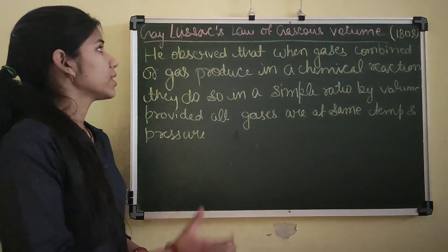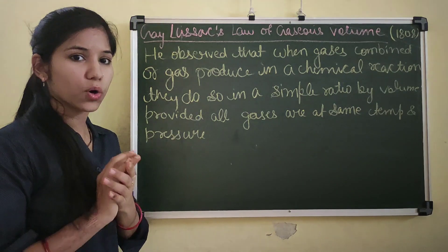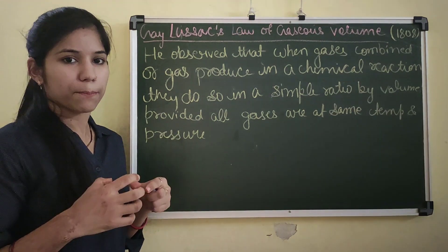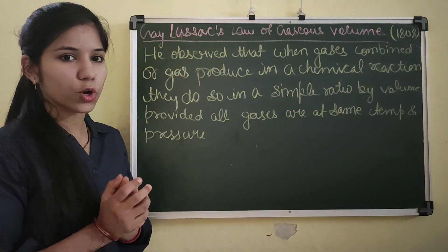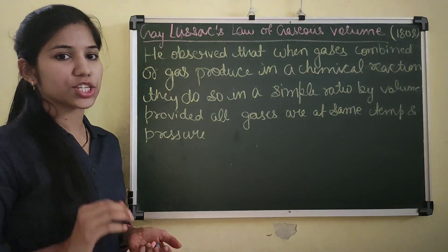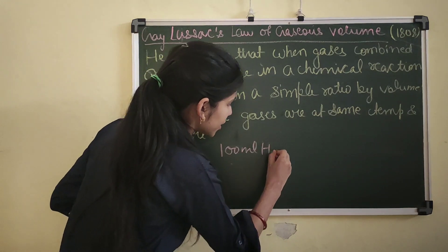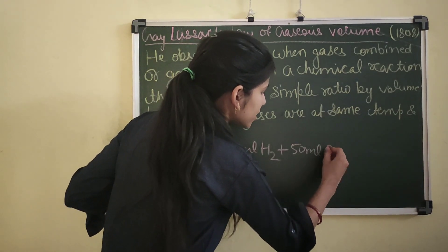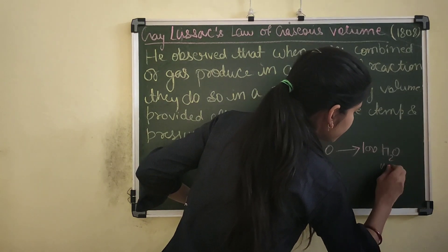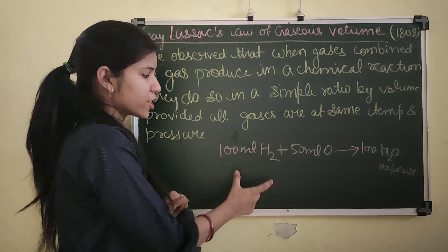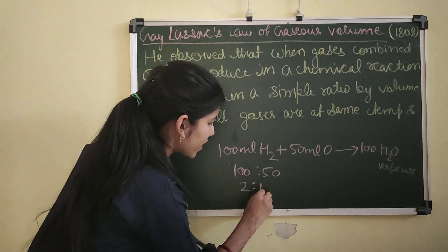Now we move on to Gay-Lussac's law of gaseous volume. This law was proposed by Gay-Lussac in 1808. He observed that when gases combine or are produced in a chemical reaction, they do so in a simple ratio by volume, provided all gases are at the same temperature and pressure. For example, if 100 ml of hydrogen reacts with 50 ml of oxygen, they form 100 ml of water vapour. The ratio is 100:50, which simplifies to 2:1.